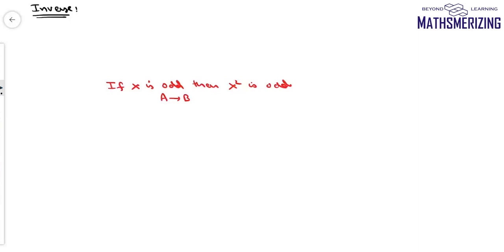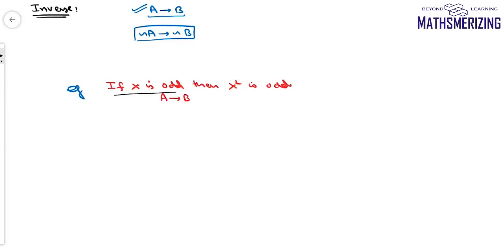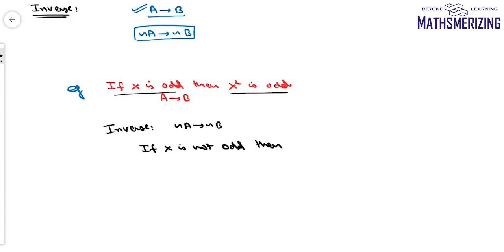We also study the inverse of a conditional statement. If A→B means 'if A then B,' then the inverse is ~A→~B. For example, if A→B is 'if x is odd, then x² is odd,' then the inverse is: 'if x is not odd, then x² is not odd.'